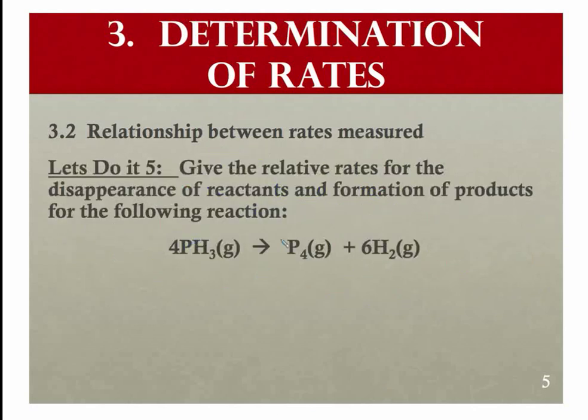So let's try a couple more very quickly. We want to set that up for this particular reaction. It says give the relative rates for the disappearance of reactants and formation of products. So let's take a look at this. This is our reactant, so I need a negative 1 over 4, and I'm going to use our simplified way of doing this. The rate with respect to PH₃, that's phosphine gas. That's actually a pretty toxic gas. My husband's company works with that.